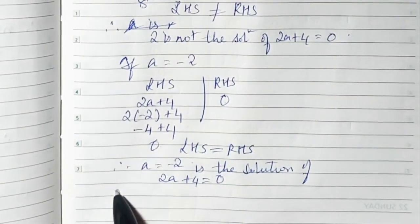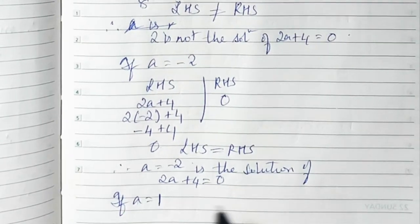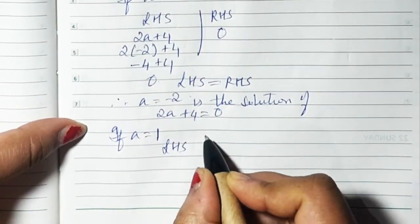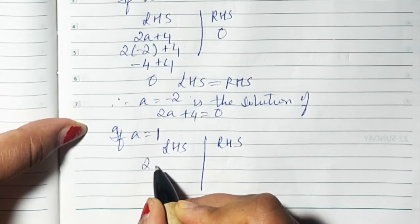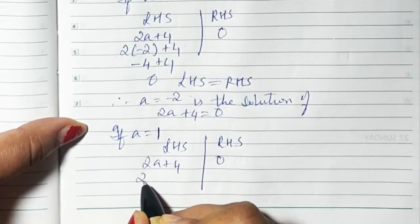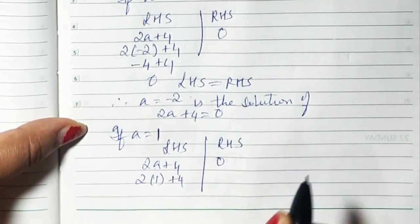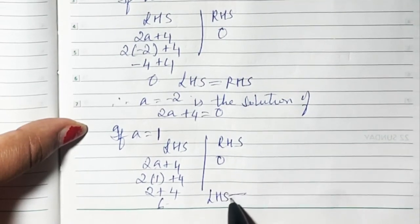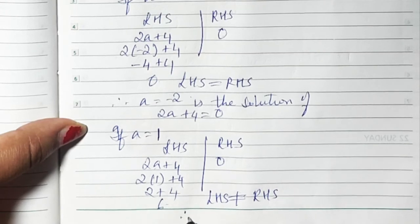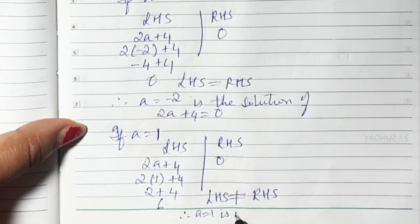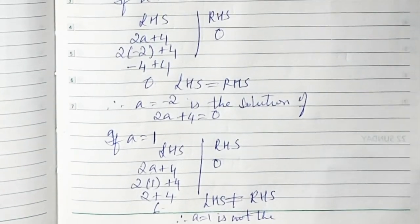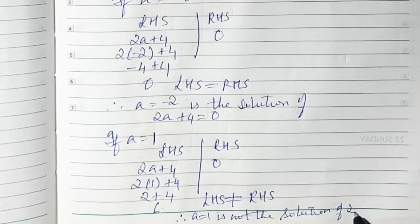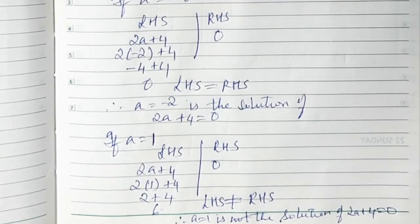The last value is A = 1. LHS is 2A + 4 and RHS is 0. Substituting: 2 × 1 + 4 = 2 + 4 = 6. Since 6 ≠ 0, LHS is not equal to RHS. Therefore, A = 1 is not the solution of 2A + 4 = 0. That's it.